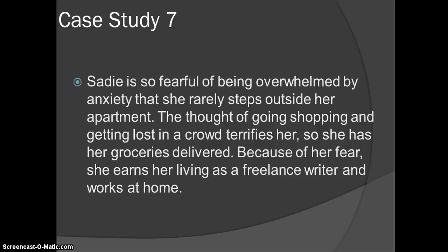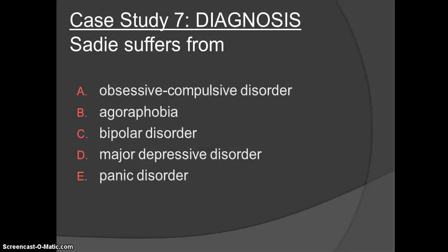Case 7. Sadie is so fearful of being overwhelmed by anxiety that she rarely steps outside her apartment. The thought of going shopping and getting lost in a crowd terrifies her, so she has her groceries delivered and earns her living as a freelance writer working at home. Sadie suffers from B, agoraphobia — the fear or avoidance of a situation in which escape might be difficult or help unavailable when panic strikes.